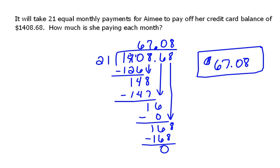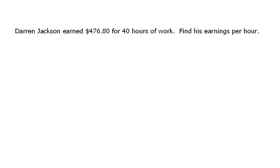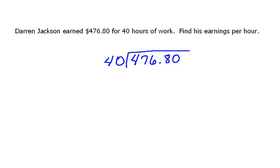Let's look at the next one. This one says Darren Jackson earned $476.80 for 40 hours of work. Find his earnings per hour. So again, we're going to do the division: $476.80 divided by 40. We're dividing by a whole number, so we can just line up our decimals and go.